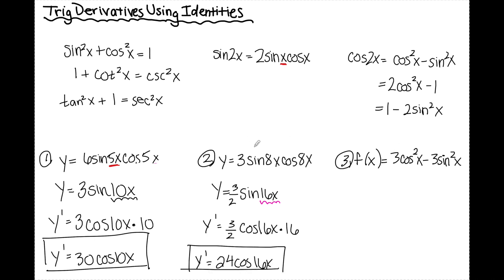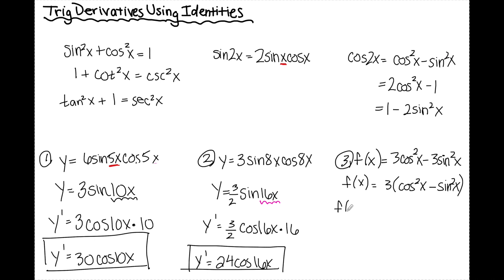Number 3 no longer looks like problems 1 and 2, so I can't use the sine of 2x formula. This matches most closely with cosine of 2x, which equals cosine squared x minus sine squared x. I have a 3 in the way, so I'm going to factor it out: 3 times (cosine squared x minus sine squared x). This matches exactly the cosine 2x formula, so I replace it to get 3 cosine 2x.